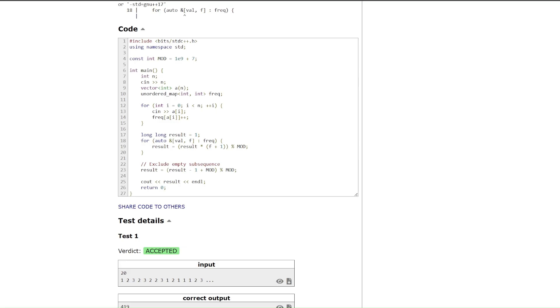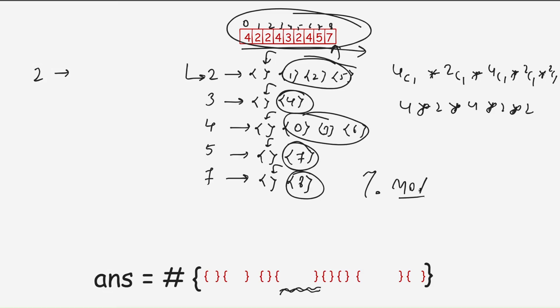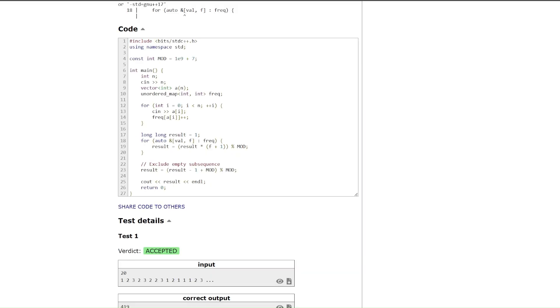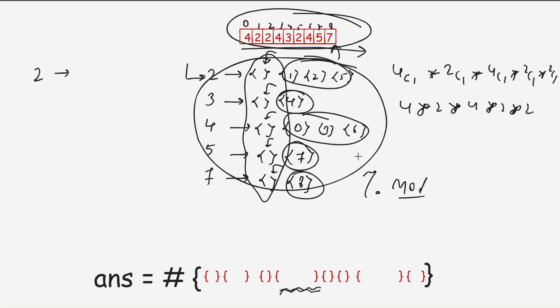So let's see code. Here we took an array and we store frequency of each element and we travel through frequency map, multiply each frequency plus 1, and at the end we exclude empty subsequence. That is, we subtract result by minus 1 because you know that after you are considering all possible, you will also get an empty subsequence and in the question you can see it is not included empty subsequence. So this is our code and if you have any doubt or any questions we can discuss in comment sections.